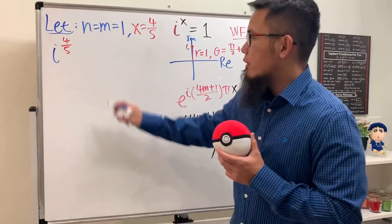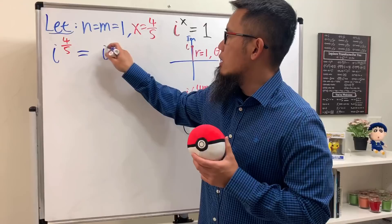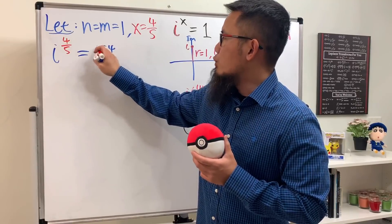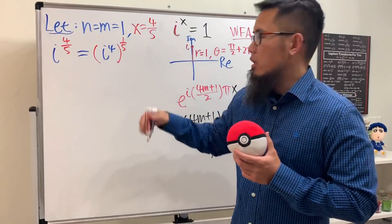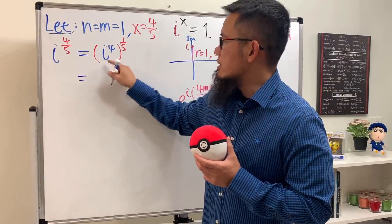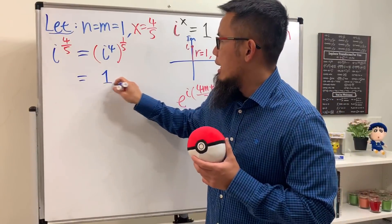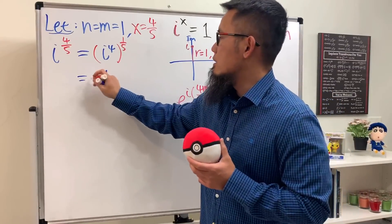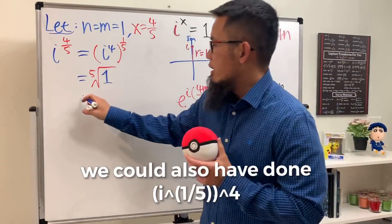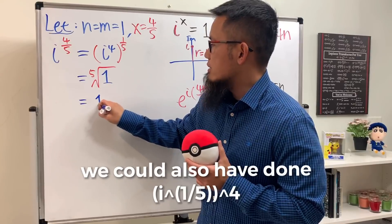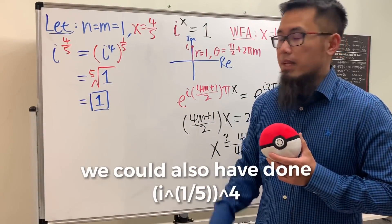With n = m = 1, we get x = 4/5. So we have i to the 4/5 power. The question now is: how exactly should we evaluate this? Should we first compute i to the 4th power, and then raise that to the 1/5 power? If we do it this way, i to the 4th is just 1, and 1 to the 1/5 is the 5th root of 1, which gives us 1. That is so nice!